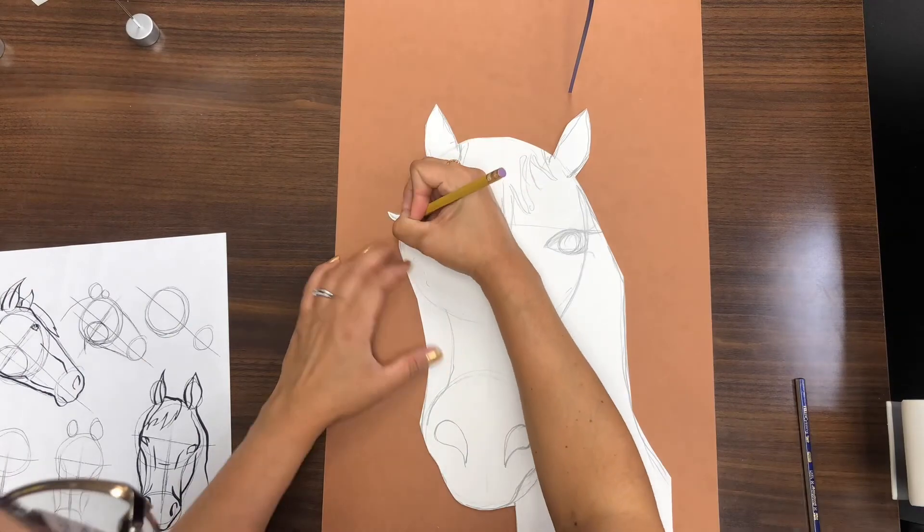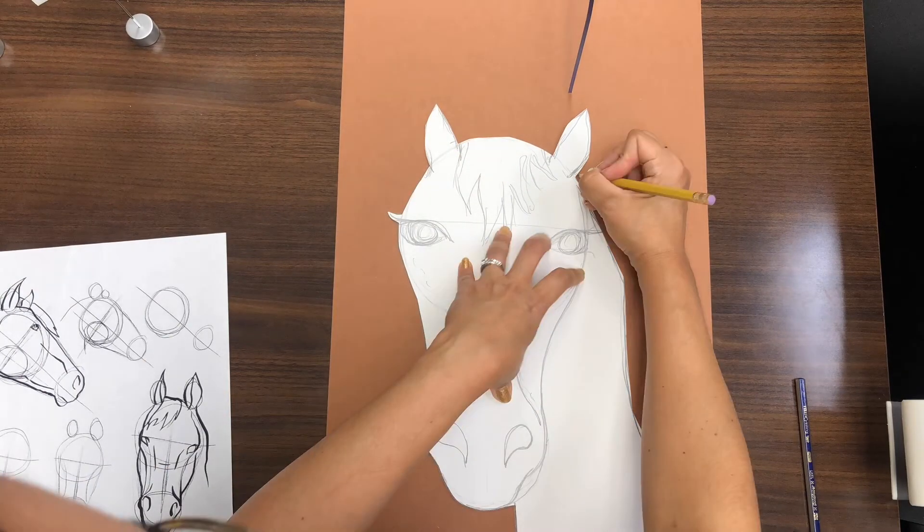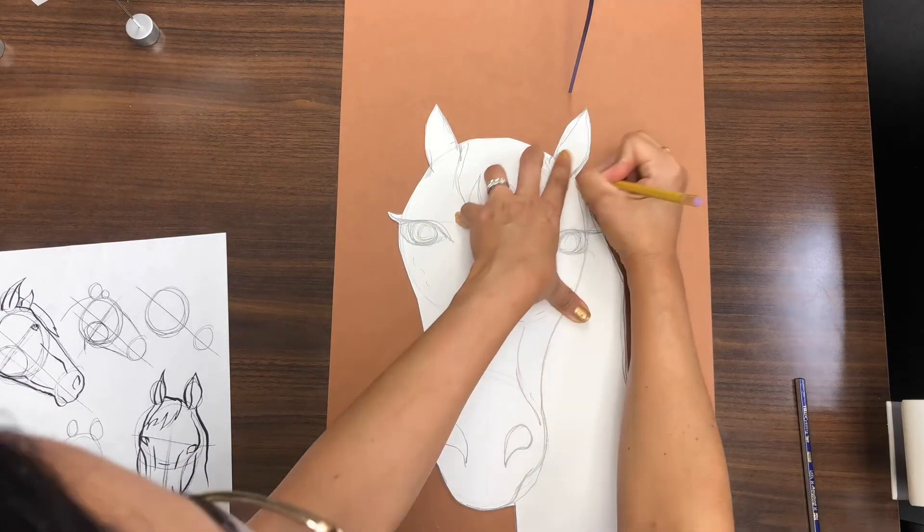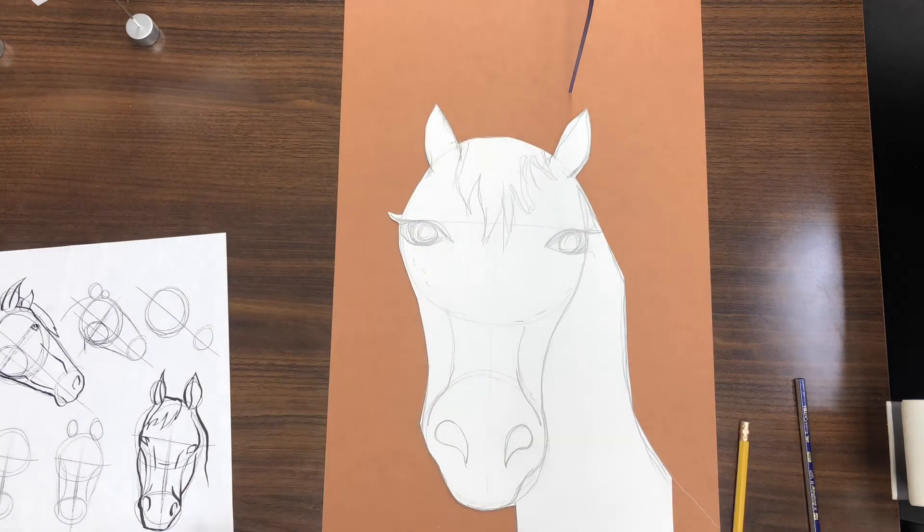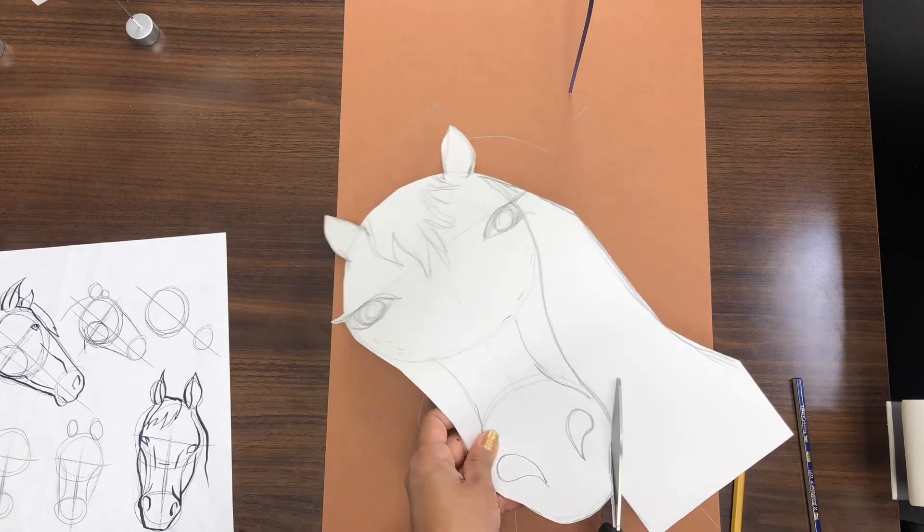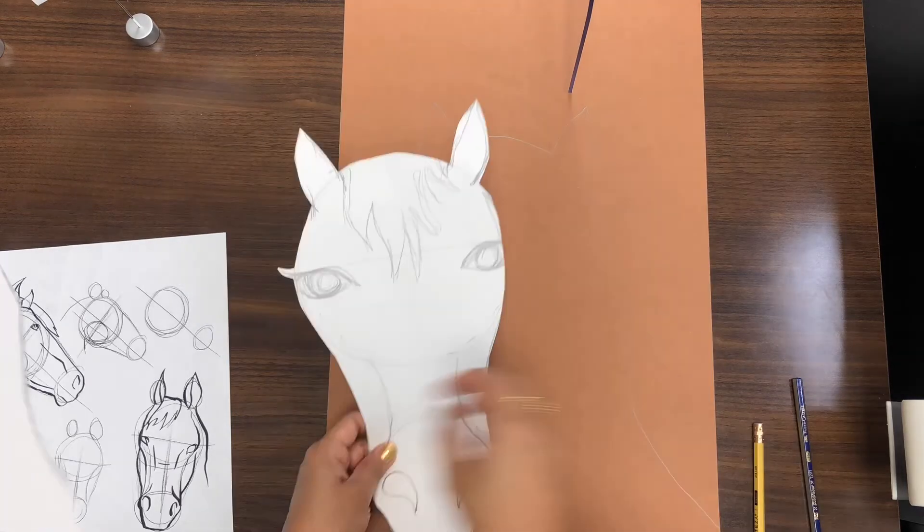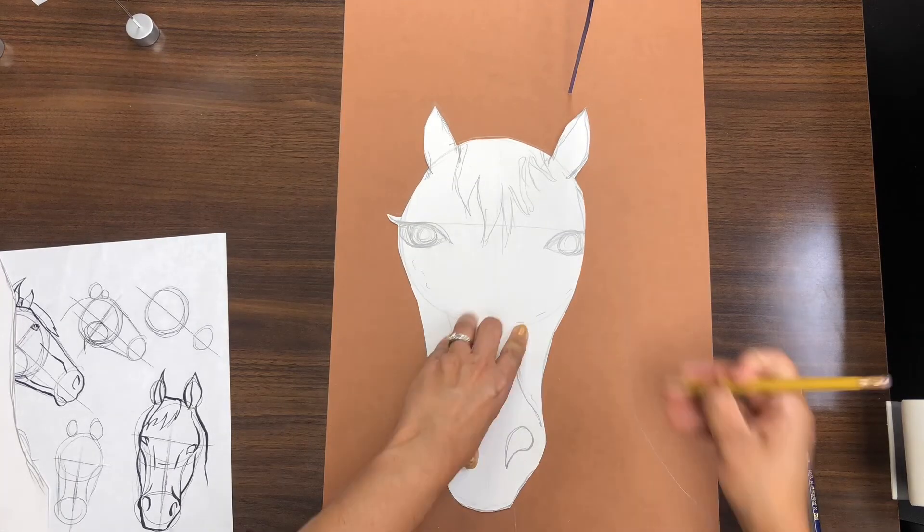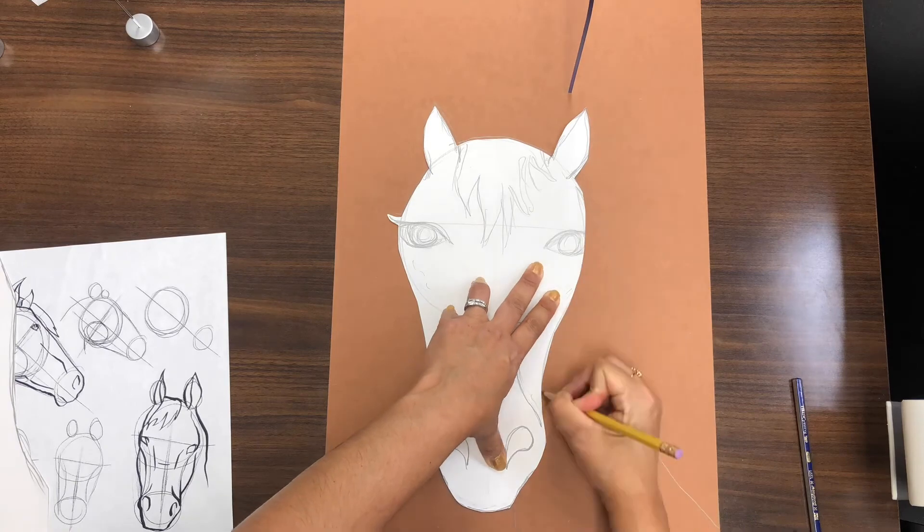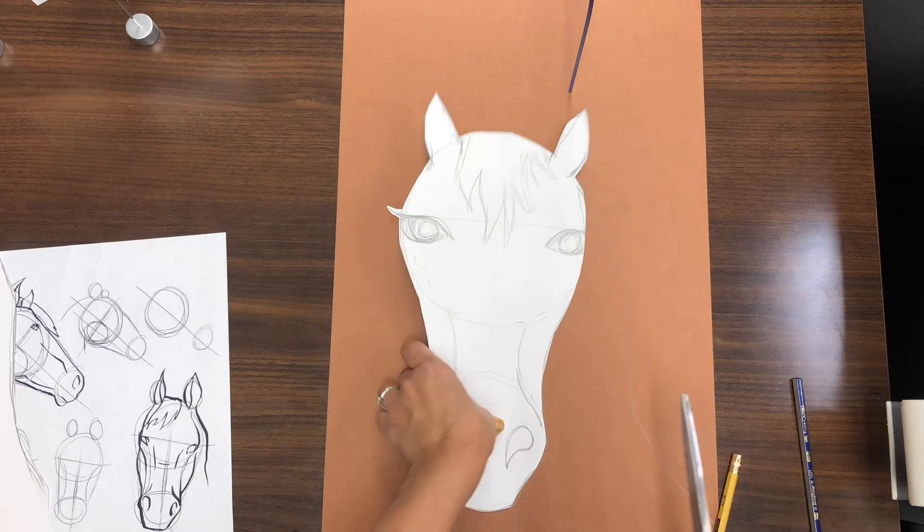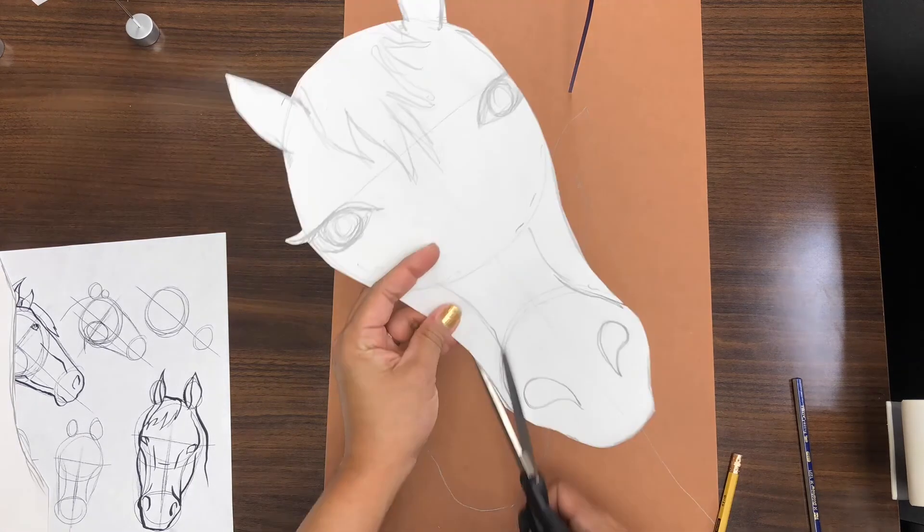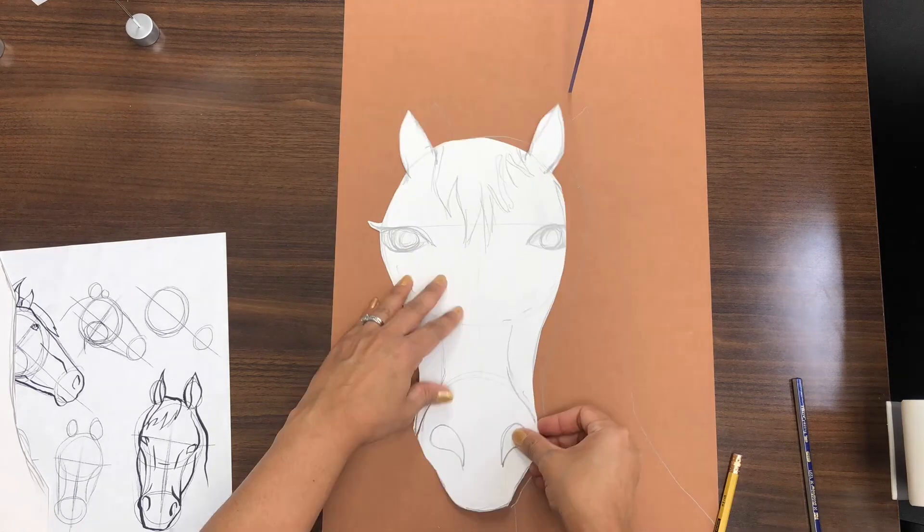After you are done cutting out your horse, place it on top of your dark colored construction paper and trace around the outside. Then you will cut the line between the body and the head, place the head back on your paper, trace that line, and you will do the same for other details such as the lines above the nose.